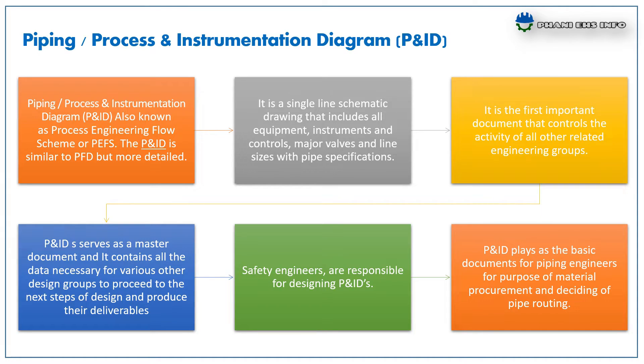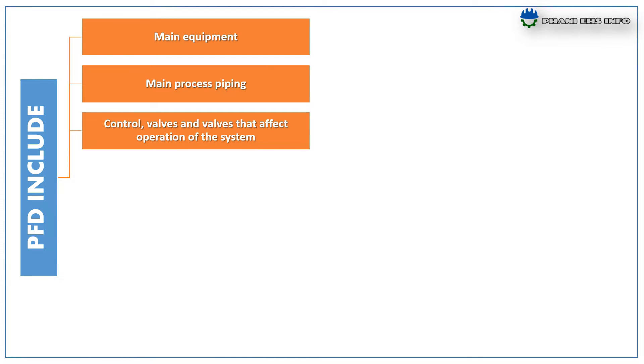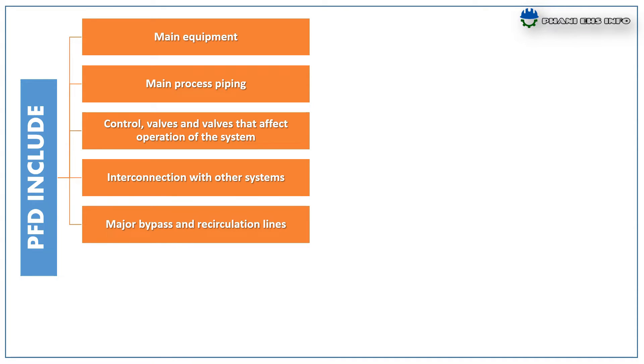So what include in PFD and P&ID? PFD include the main equipment, main process piping, control valves and valves that affect the operation of the system, interconnection with other systems, major bypass and recirculation lines.